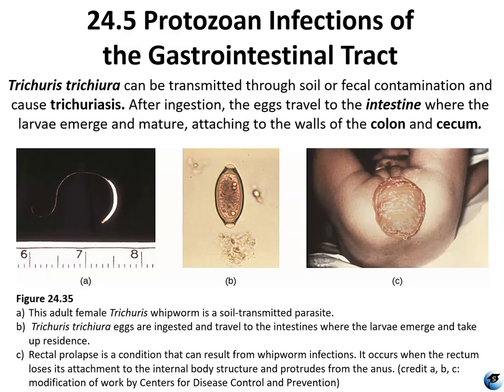The eggs end up in the intestines and take up residence there. This figure also shows what is known as rectal prolapse, something that happens with untreated whipworm infections, where the rectum is no longer attached to the colon and exits the body — the rectum prolapses and actually comes out of the anus.